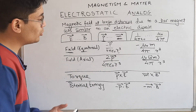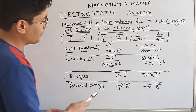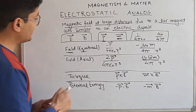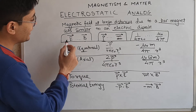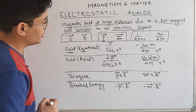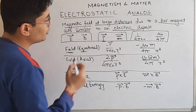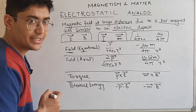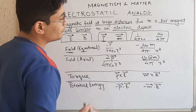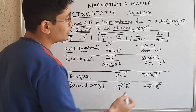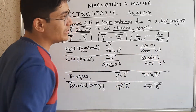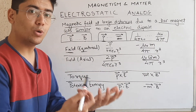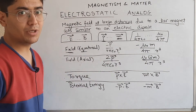So if you make all these replacements in those formulas — such as replacing the electric field with the magnetic field, the dipole moment of an electric dipole with the dipole moment of a magnetic dipole, and 1 by 4π ε₀ with μ₀ by 4π — then you get the corresponding magnetic dipole formula.